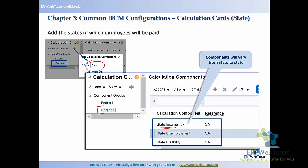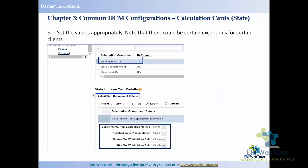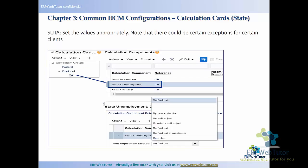You need to make sure that you add all the states that your customer operates in. The components will vary from state to state. These are the details of the different values selected — state income tax details are shown here. Similarly, when you select state unemployment, these are the different calculation details that you need to define.